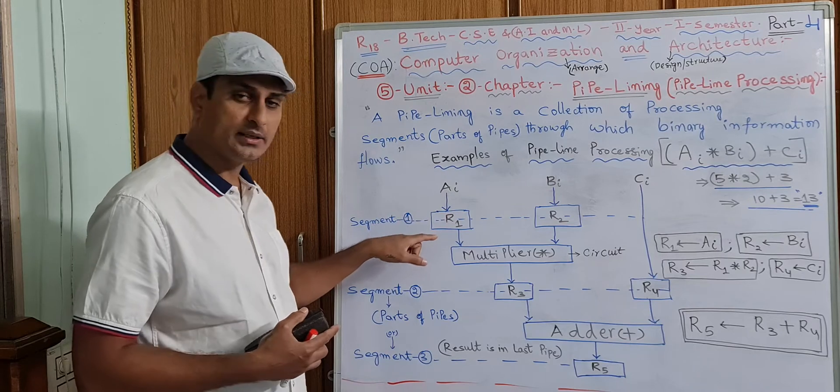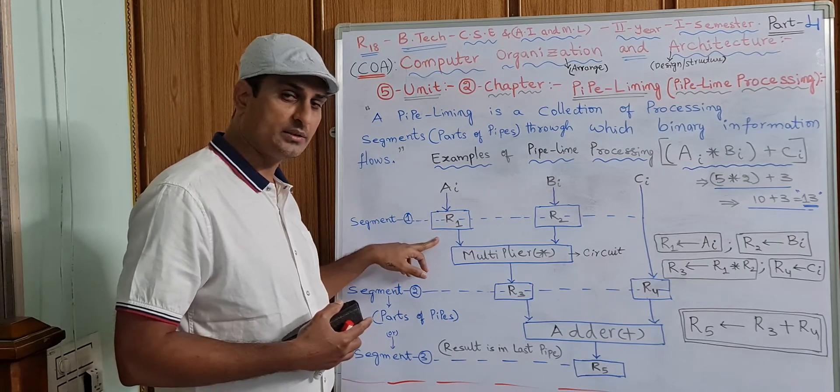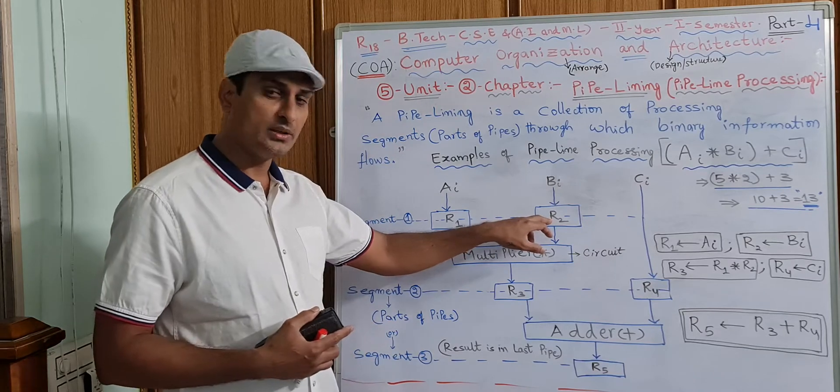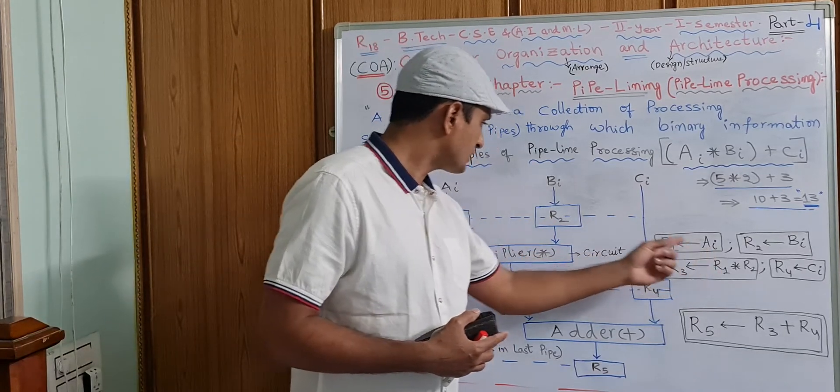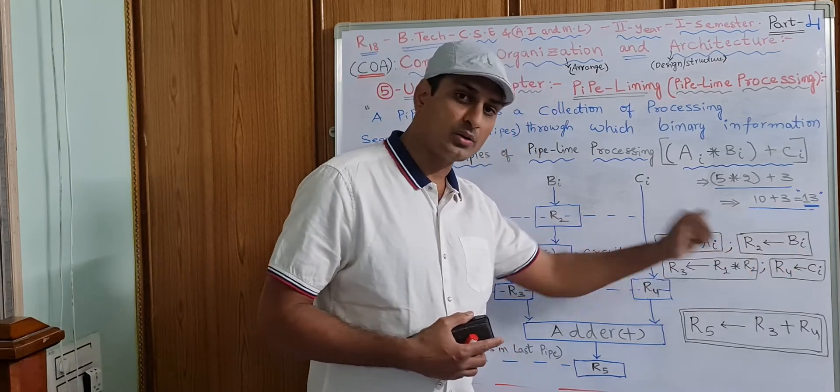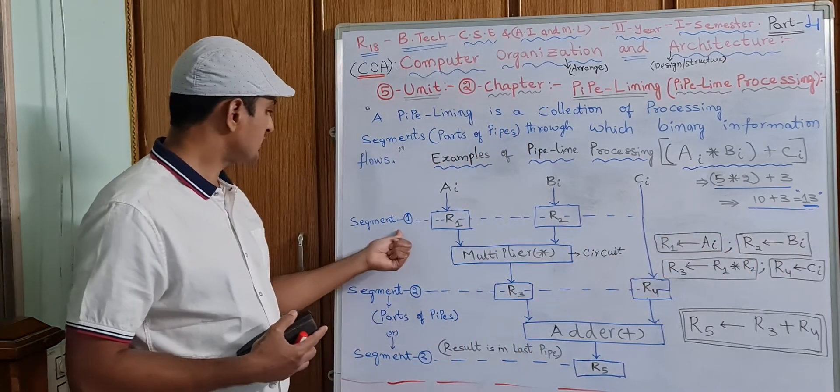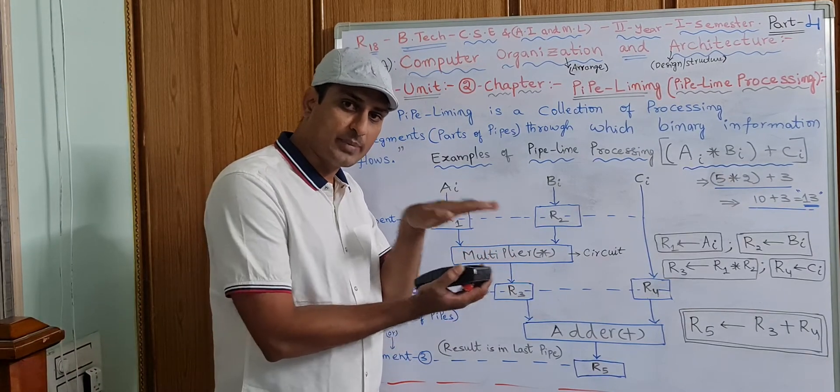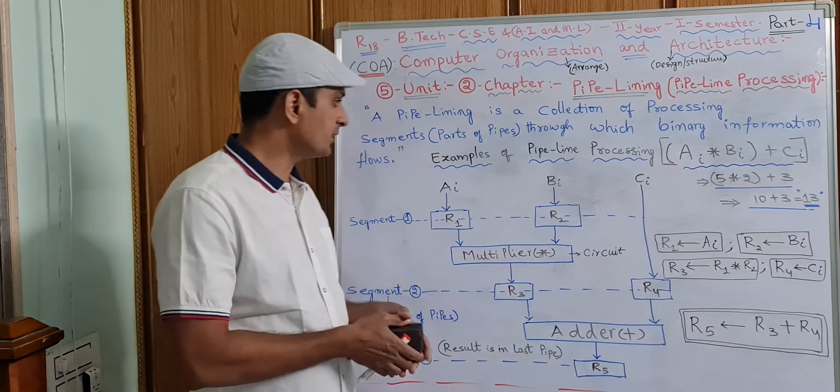AI value will be inserted into R1 register and BI value is inserted into R2 register. AI transfers to register R1, BI transfers to register R2. In the first segment, the multiplication operation will be done.